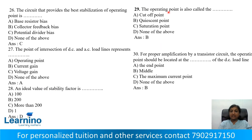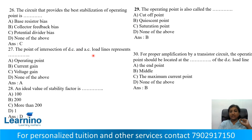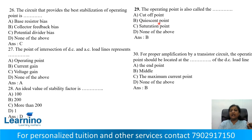Question number 29: The operating point is also called the quiescent point. Correct answer is Option B: Quiescent point. The operating point is also called the quiescent point.